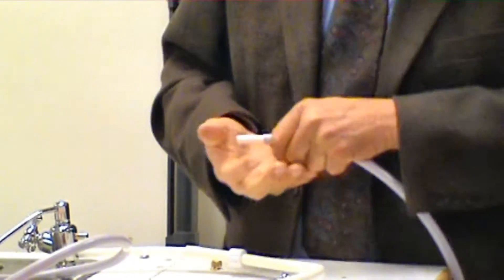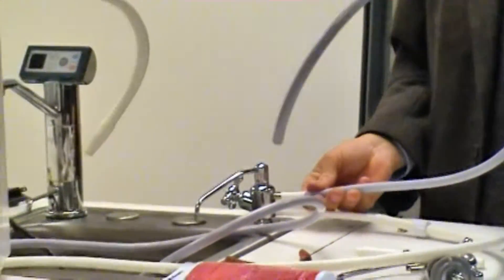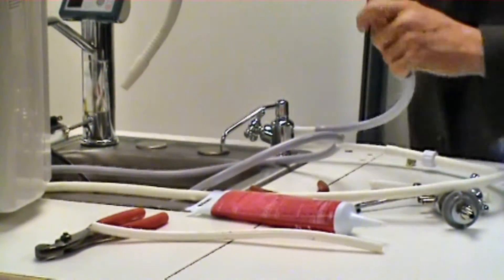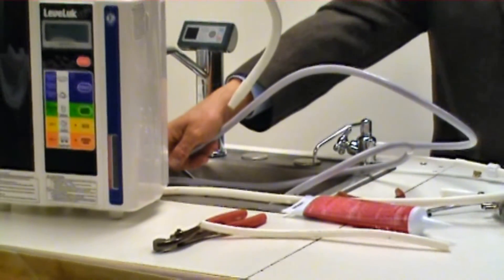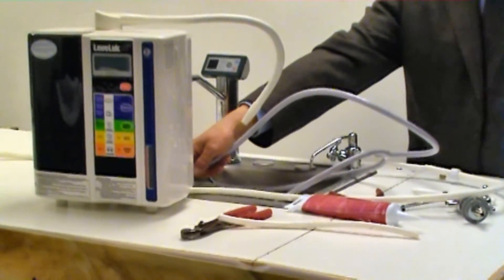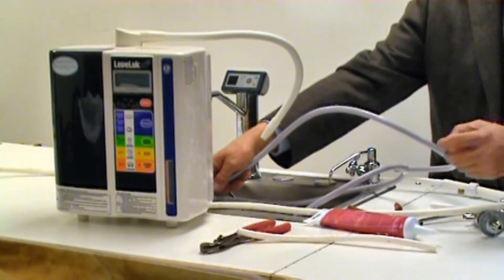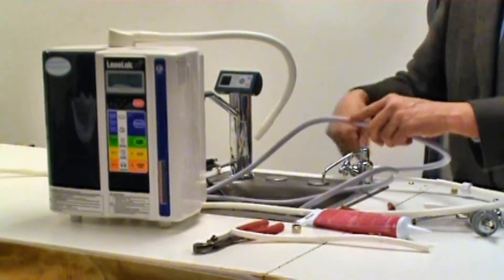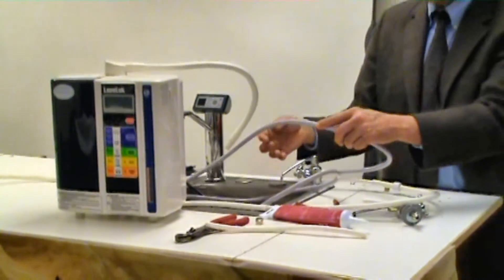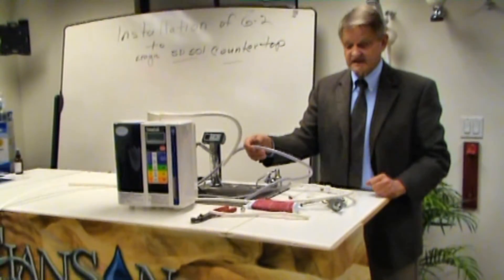And where this acts only as a drain, this hose just fits on there, comes out the hose, out the ionizing machine, the SD501, and puts the water here into the sink or into the container that you choose to collect the acid water from.